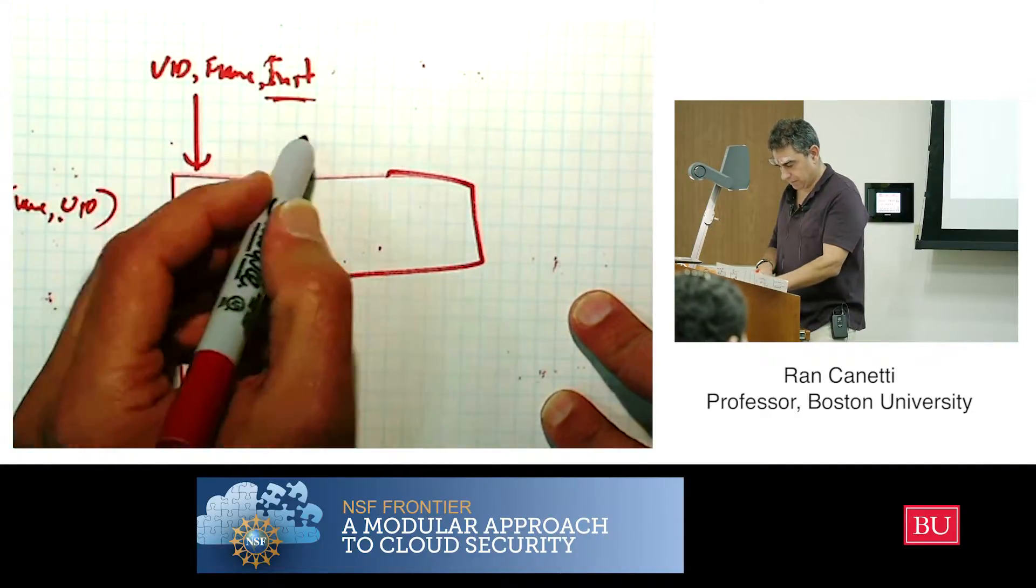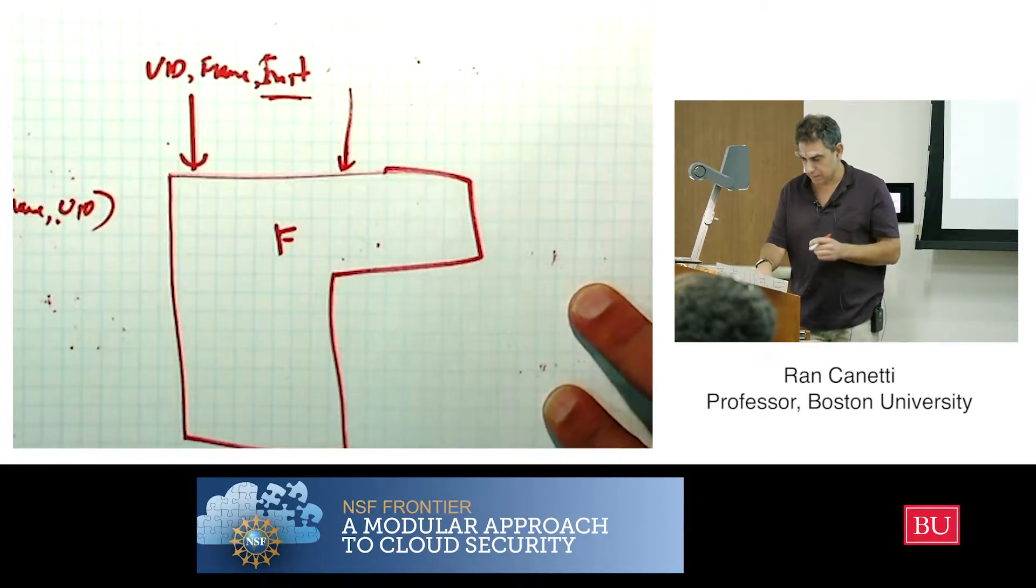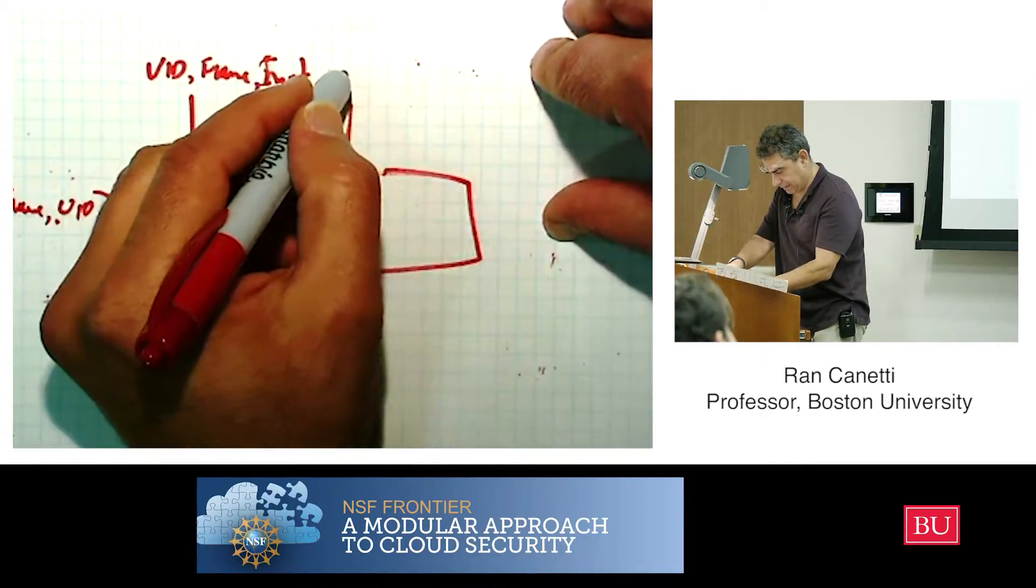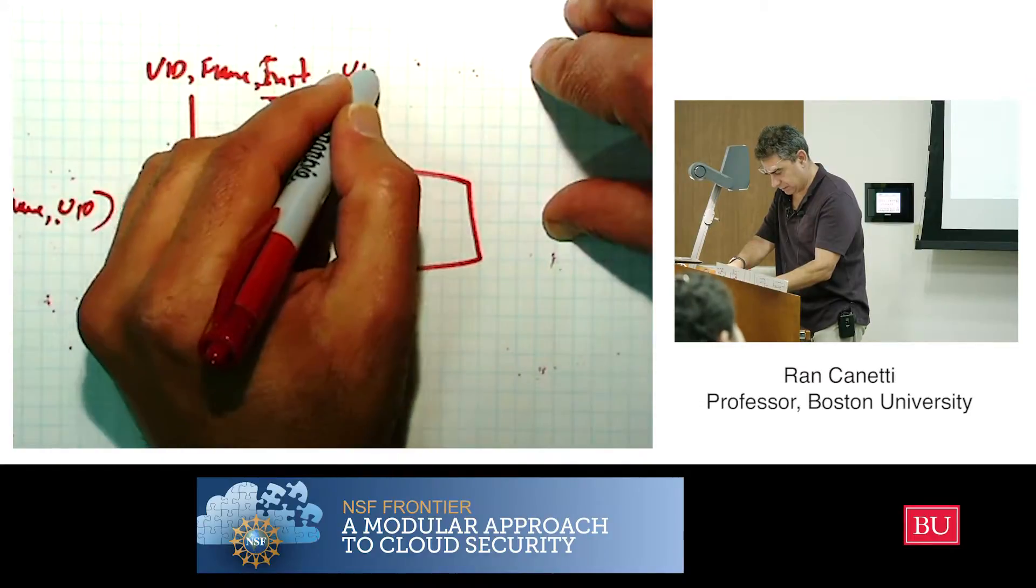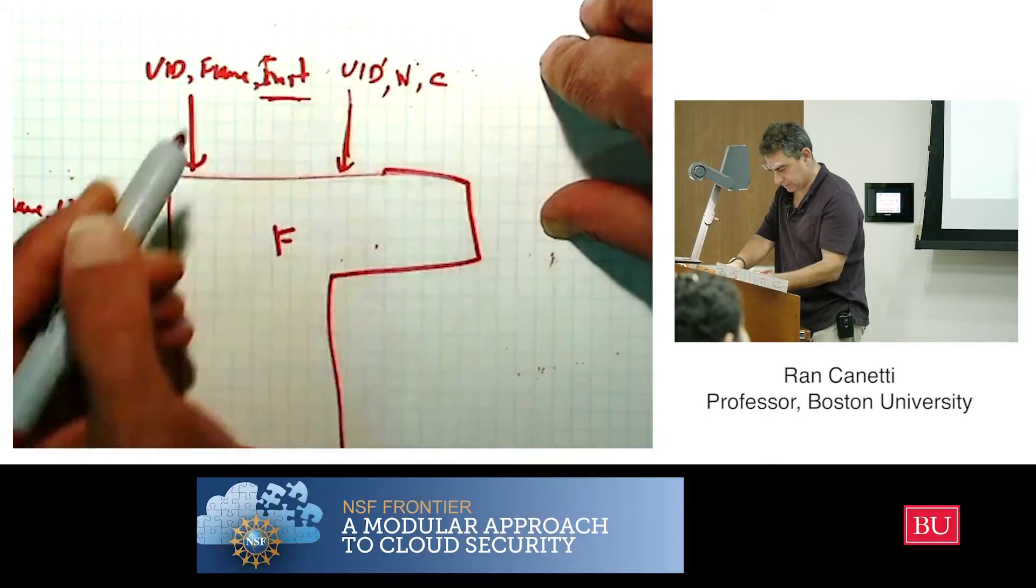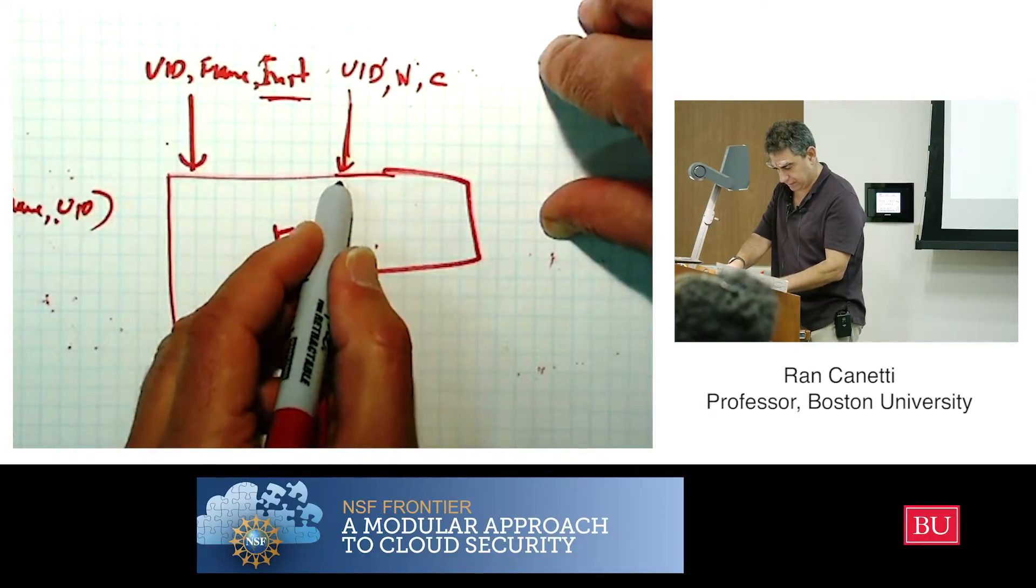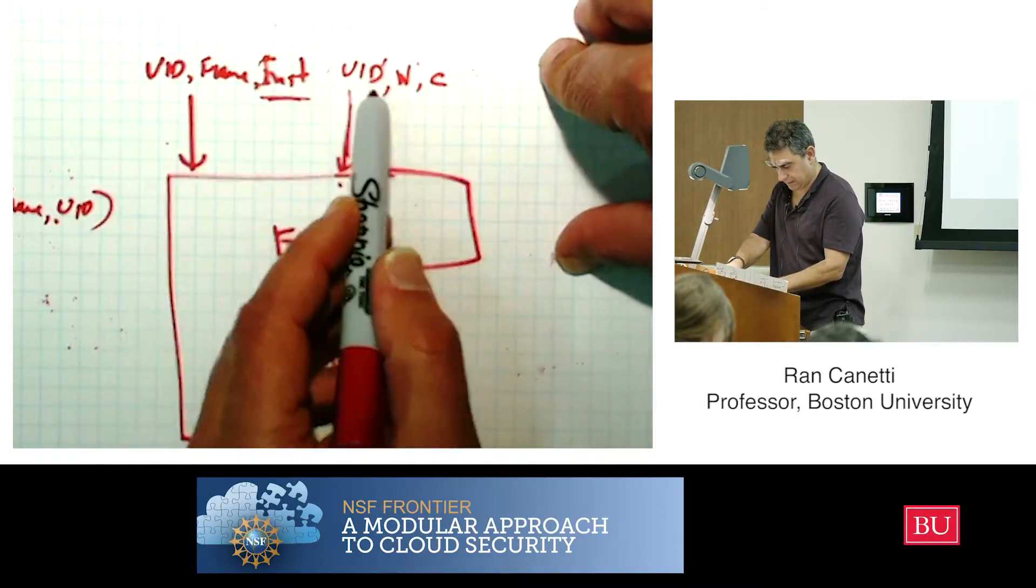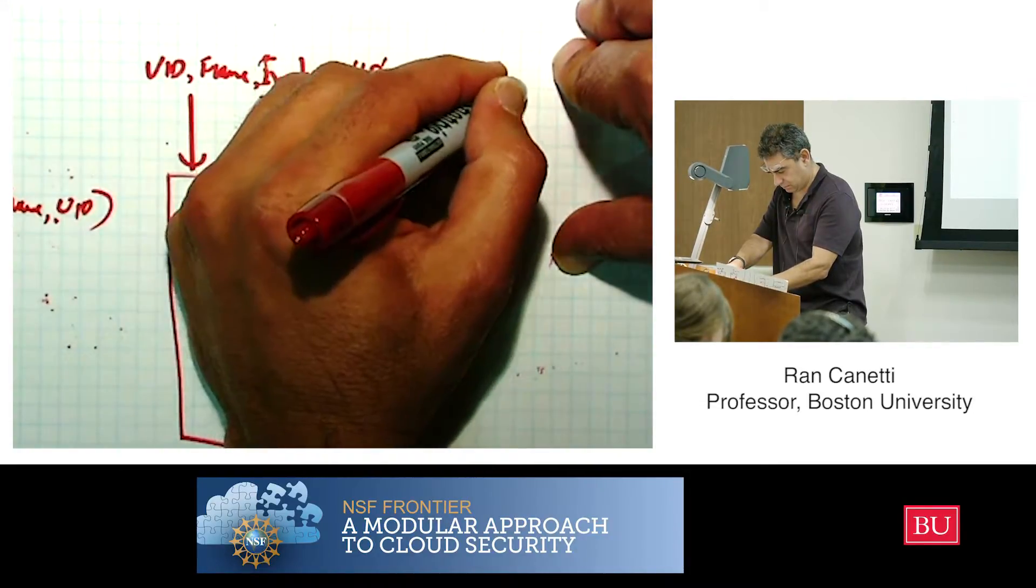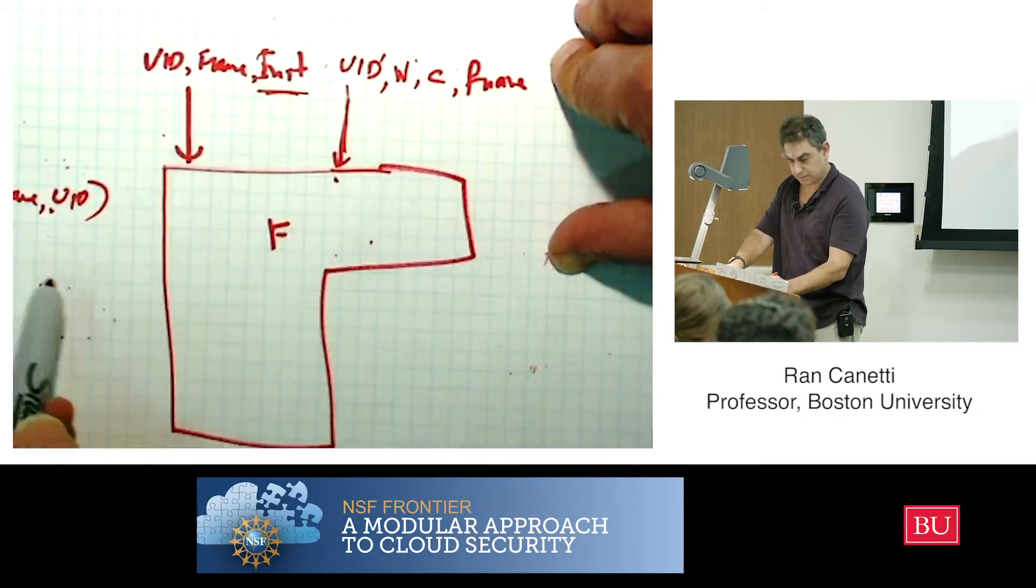And now, when I get an input, when I get input UID prime, and write, and contents, what do I do? I'm checking if UID prime and filename, I'm checking if the pair UID prime and F name are in my database.